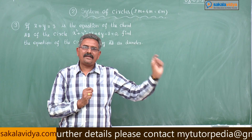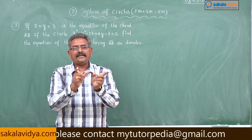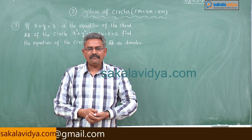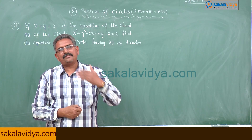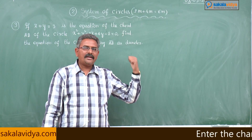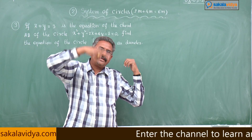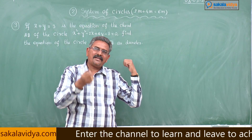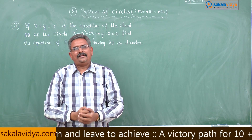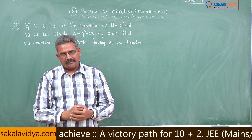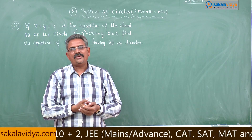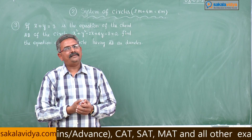After substituting the S value and L value, we write it in general form of the equation of the circle: x squared plus y squared plus 2gx plus 2fy plus c equals 0. Then we find the centre. According to the problem, AB becomes the diameter of the required circle, which means the centre lies on that chord. So we substitute that centre into the given chord equation, which gives us the lambda value. Substituting lambda back into S plus lambda L equals 0, the required equation of the circle is obtained.